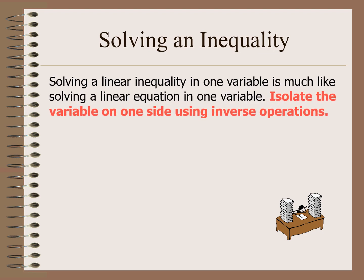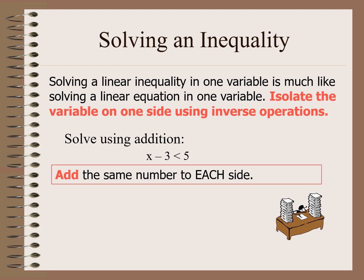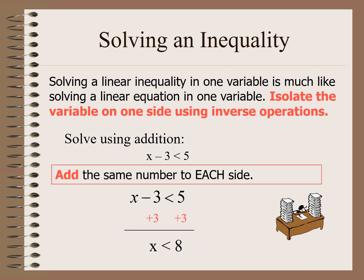Solving an inequality: solving a linear inequality in one variable is much like solving a linear equation in one variable — isolate the variable on one side using inverse operations. Solve using addition: if we have x minus 3 is less than 5, it involves subtraction so we add. Adding plus 3 to each side gives us x is less than 8.